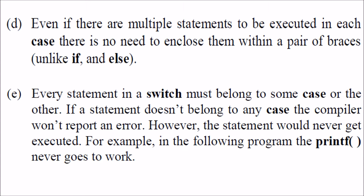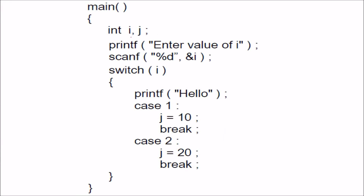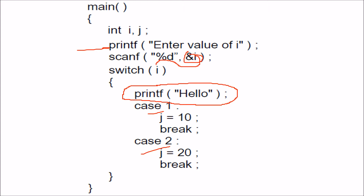You can have multiple statements in a case without needing braces. Every statement in switch must belong to some case. If a line is inside the switch but not belonging to any case, the compiler will not report any error — it will just ignore it. For example, a printf inside the switch but outside any case will never be executed because switch uses a jump table, and the compiler essentially ignores that orphan line.